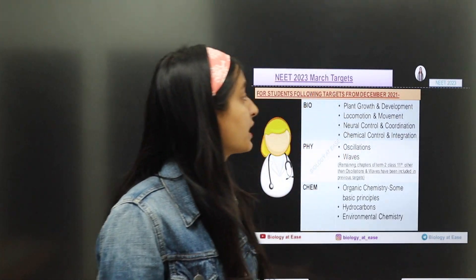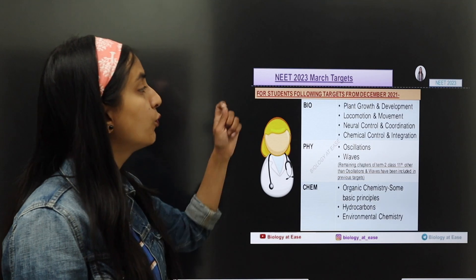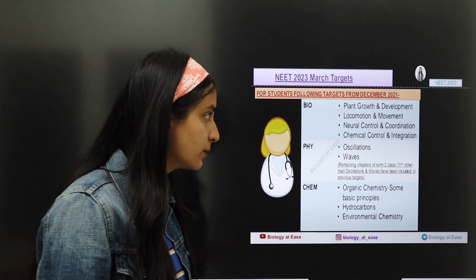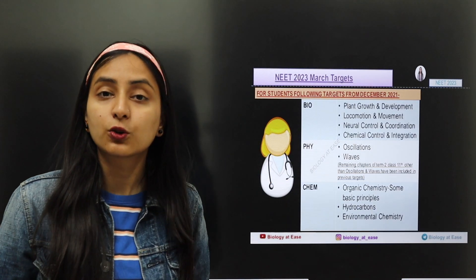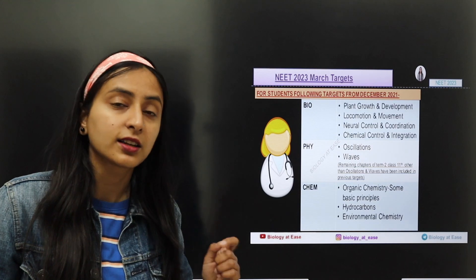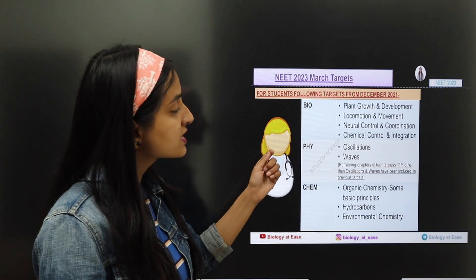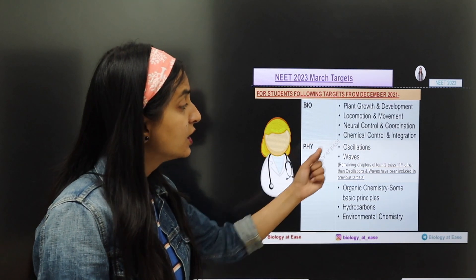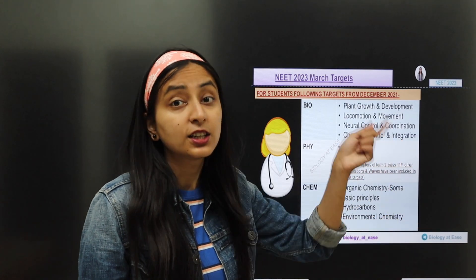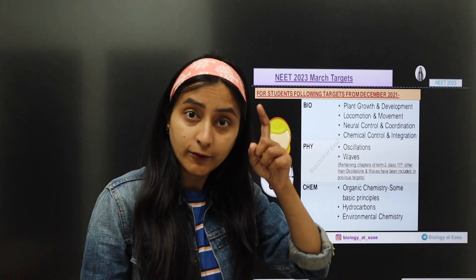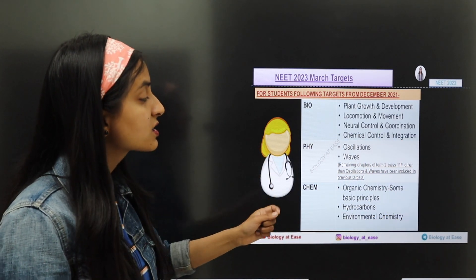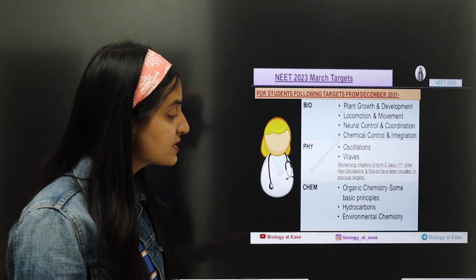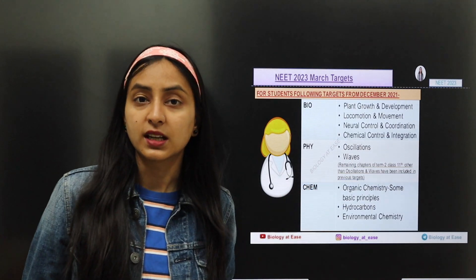For those following my targets from December month, in Biology they will do: Plant Growth and Development, Locomotion and Movement, Neural Control and Coordination, and Chemical Coordination and Integration. In Physics, they will do Oscillations and Waves — and any chapters not mentioned will be covered from Term 2. In Chemistry: Organic Chemistry — Some Basic Principles, Hydrocarbons, and Environmental Chemistry.